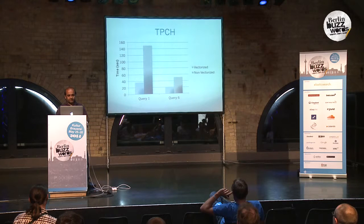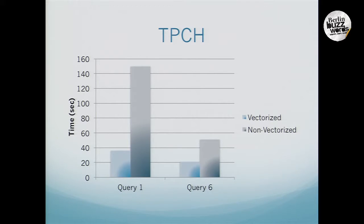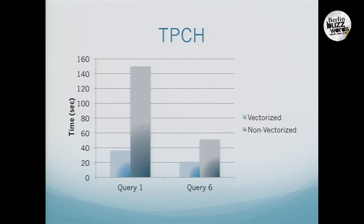That is demonstrated by our next experiment. We ran TPCH query one and query six. The only difference between them is that query one is a lot more CPU-intensive — it has a lot more expressions. Query six is a much simpler query. It is evident that query one's performance gain has improved a lot more than query six. This was run on a local cluster with more powerful CPUs, which further confirmed that we are getting very decent performance gains.